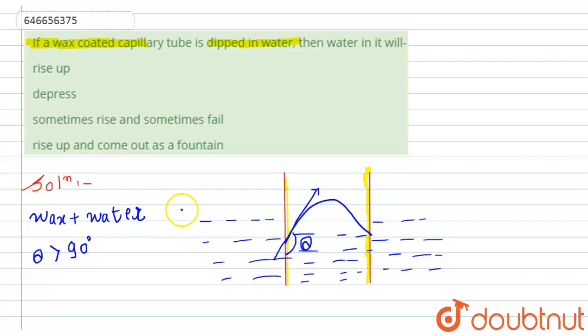So according to this, option second will be the correct answer: if a wax-coated capillary tube is dipped in water, then water in it will depress. This is the required solution.